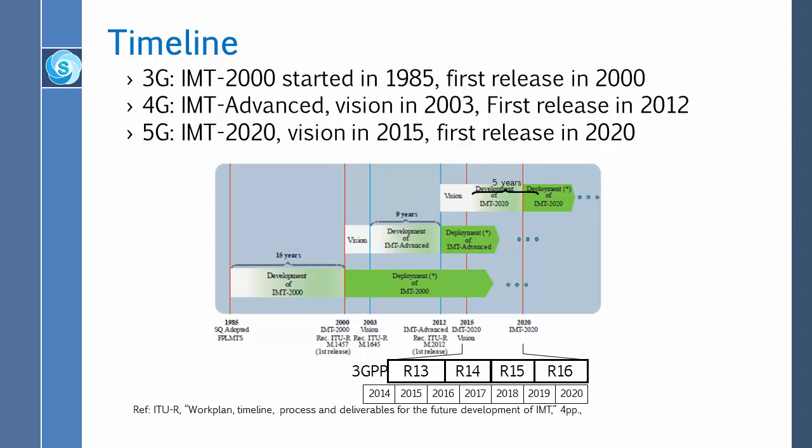The pace is getting faster — from 15 years to 9 to 5. This is difficult for telecommunication companies because they deal with millions of things and cannot change overnight. Five years is a very short time for them because it is infrastructure. IMT 2020 marks the date deployment will start.